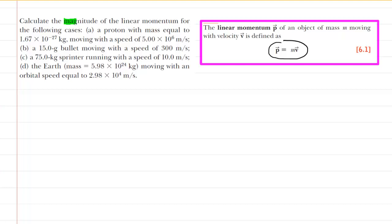Now, since this question only wants the magnitude of the linear momentum, we can drop the vector notation. So, in fact, the equation simplifies even further to just P equals mass times V, where V would just represent the speed rather than the velocity.